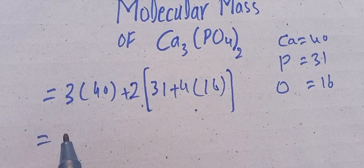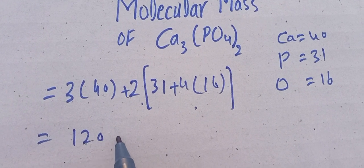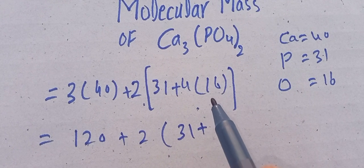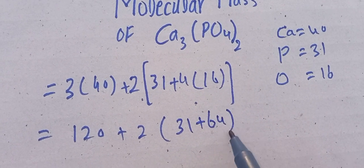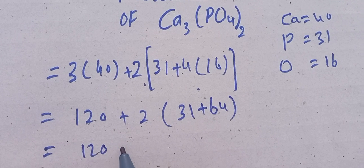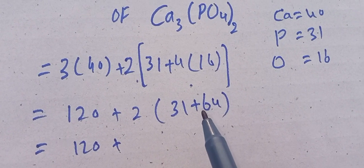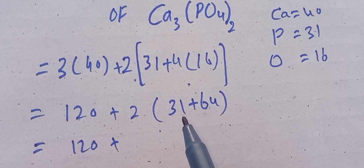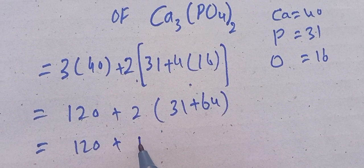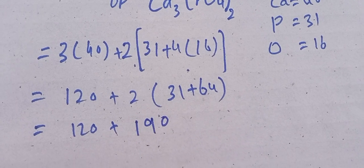40 multiplied by 3 equals 120. Plus 2 times: 31 plus 16 multiplied by 4 equals 64. And 31 plus 64 equals 95. 95 multiplied by 2 equals 190.